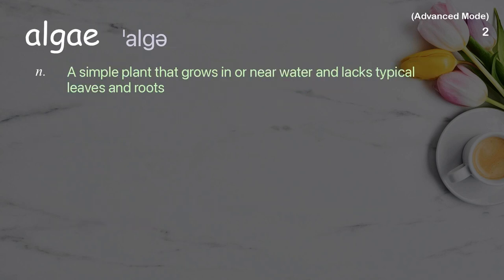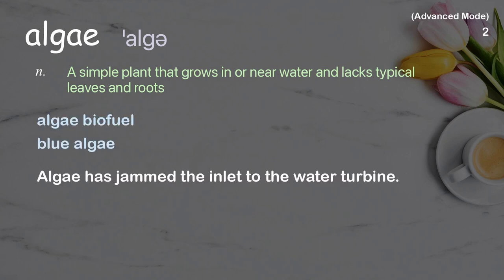Algae: A simple plant that grows in or near water and lacks typical leaves and roots. Examples: algae biofuel, blue algae. Algae has jammed the inlet to the water turbine.